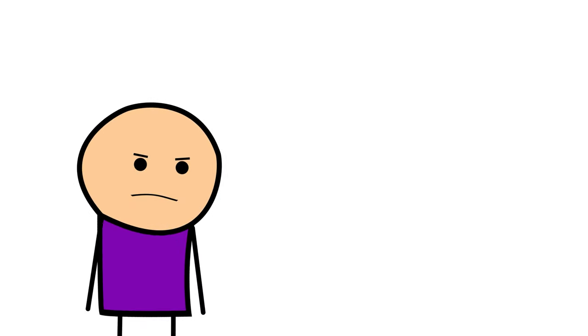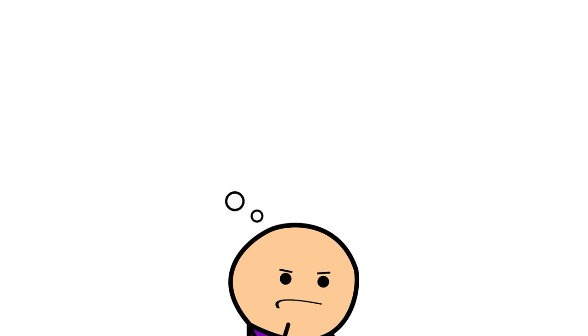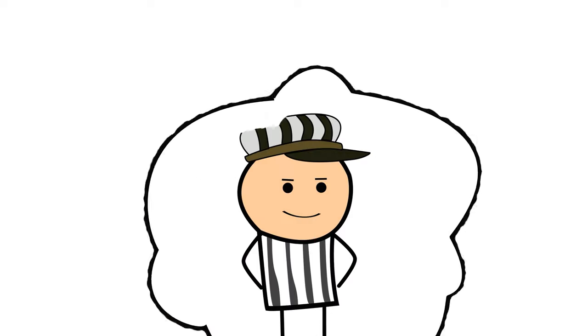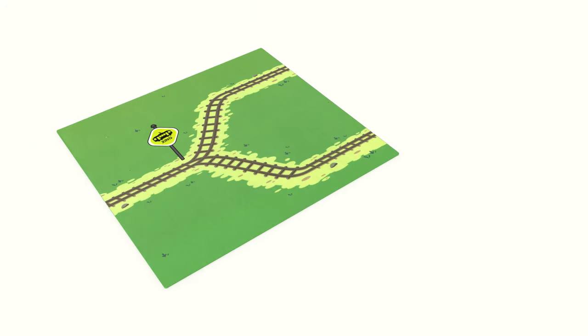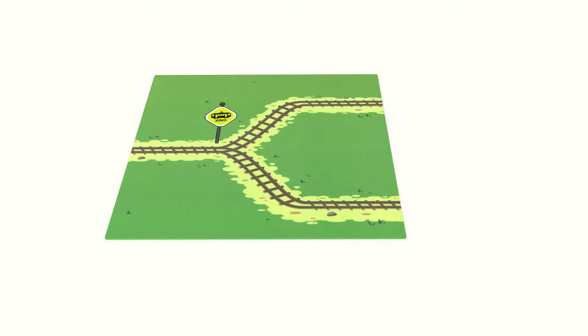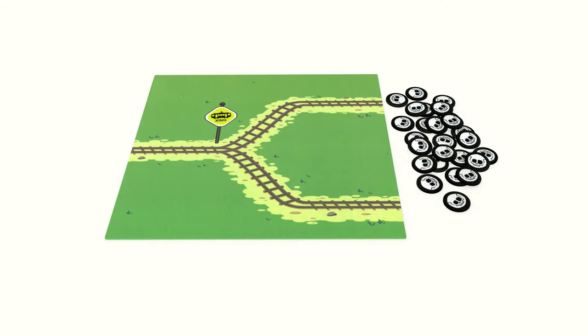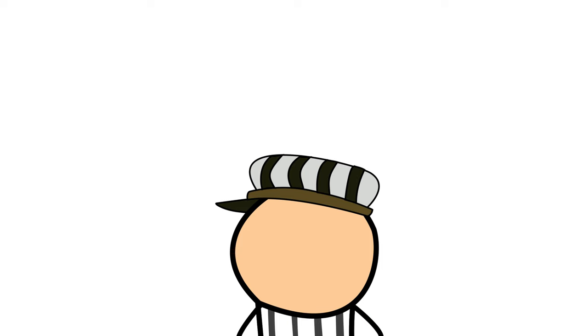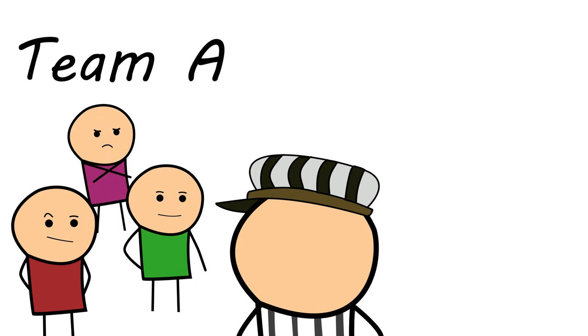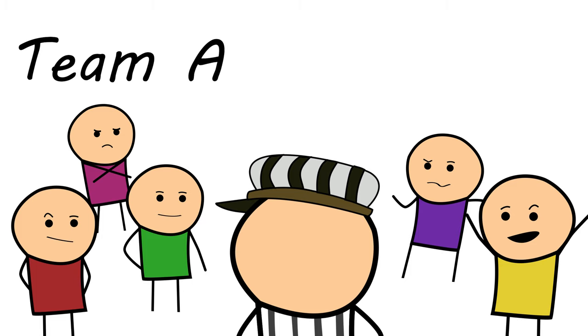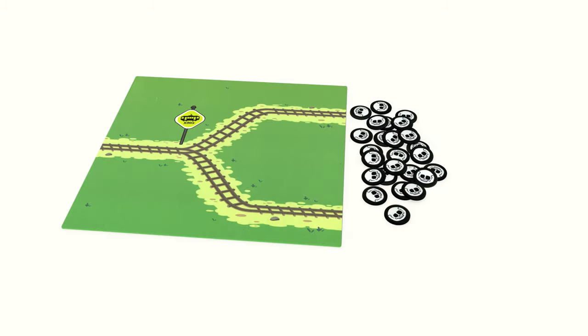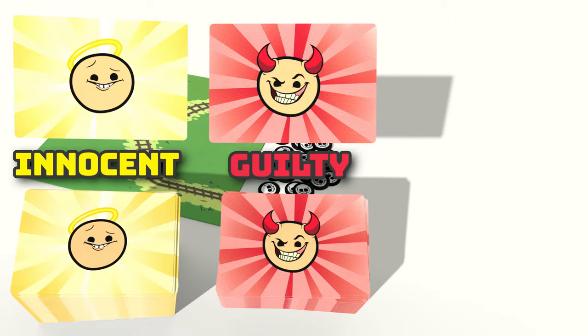Before we start explaining the steps, we should tell you about setup. Whoever last pondered about being a trolley conductor will start the game as the first conductor. Place the board on the table so that the side with the single track is pointing at the murderous conductor. There are two sides to the board and either is fine to pick. Place all the death tokens next to the trolley board so all players can reach them. All the other players split into two teams — the teams can be uneven. Everyone to the left of the conductor is on one team, let's call them team A, and everyone to the right is on team banana. Separate the cards into their respective decks: innocent, guilty, and modifier cards.